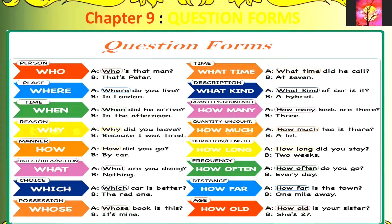When the answer needed is a person, then we can use the question word 'who.' For example: 'Who is that man?' — 'That's Peter.' When the answer needed is a place, then we can use the question word 'where.' For example: 'Where do you live?' — 'In London.' When the answer required needs to show a sense of time, then we use the question word 'when.' For example: 'When did he arrive?' — 'In the afternoon.' When the answer is a reason, then the question word used will be 'why.' For example: 'Why did you leave?' — 'Because I was tired.' When the answer requires showing the manner in which an action was performed, then we use the question word 'how.'